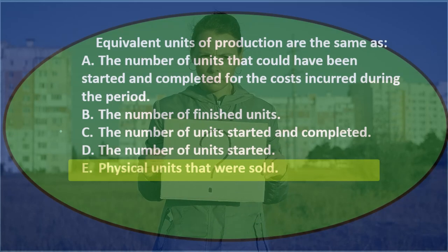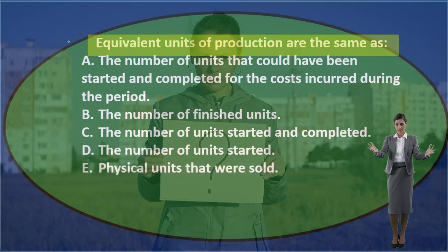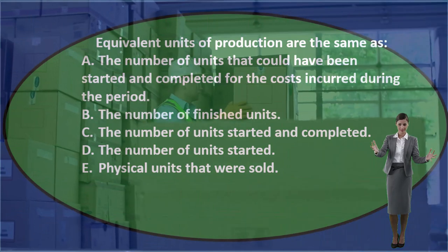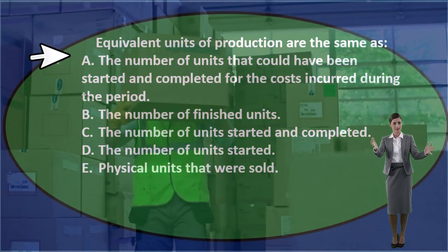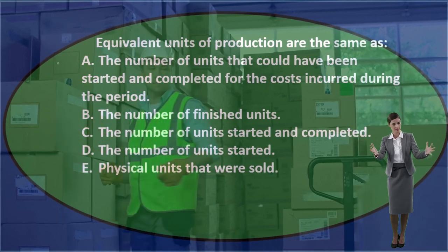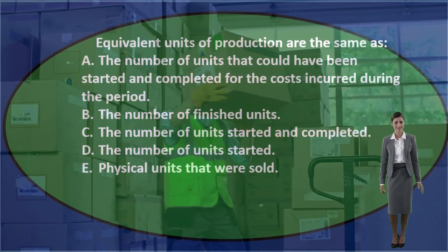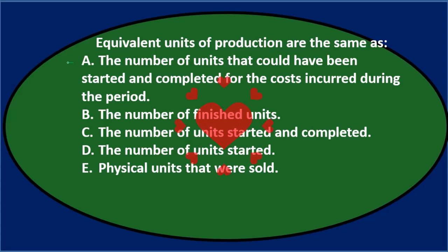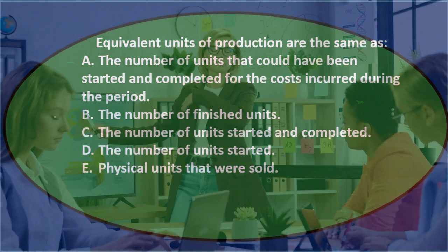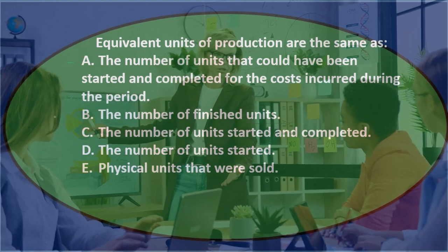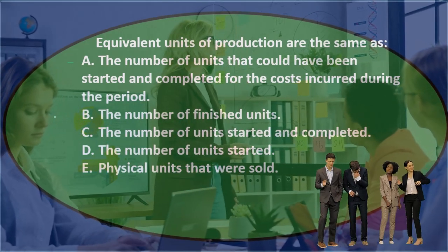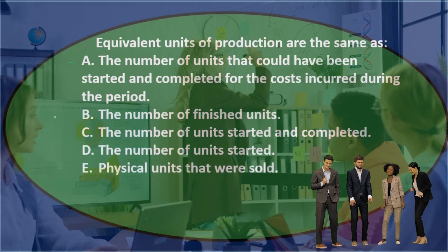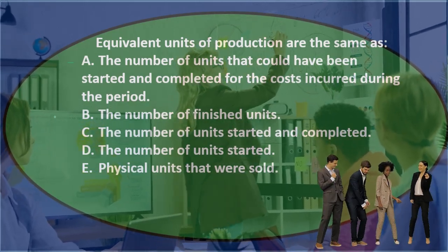Let's go through this using the process of elimination. Equivalent units of production are the same as — A) the number of units that could have been started and completed for the costs incurred during the period. That sounds like it could possibly be it. Notice it's a bit longer. Sometimes a longer description with qualifications may indicate a true answer, because a true answer needs to rule out cases where it might not hold.